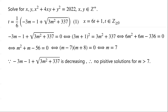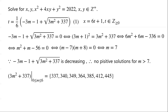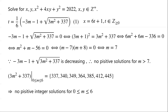As (negative 3m minus 1 plus root of (3m squared plus 337)) is decreasing, there are no positive solutions when m is greater than 7. When m is between 0 and 6 inclusive, 3m squared plus 337 equals 337, 340, 349, 364, 385, 412, 445 respectively. As none of these is a perfect square, there are no positive integer solutions when m is between 0 and 6.